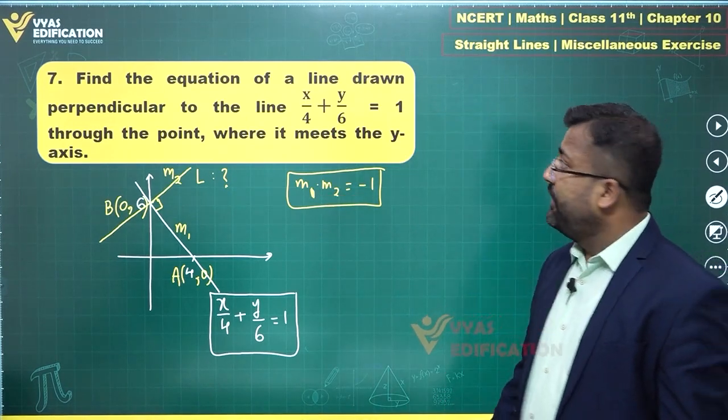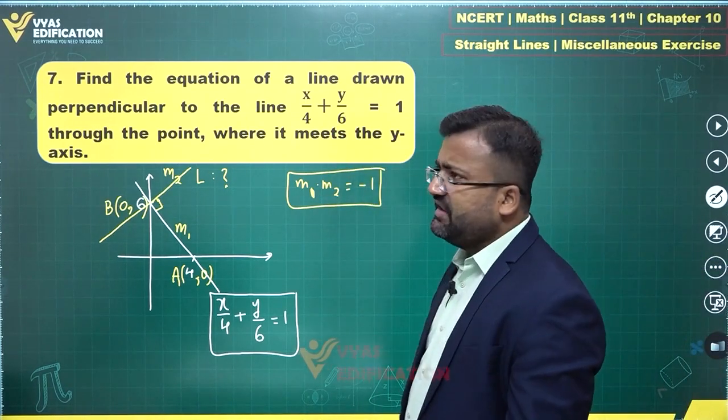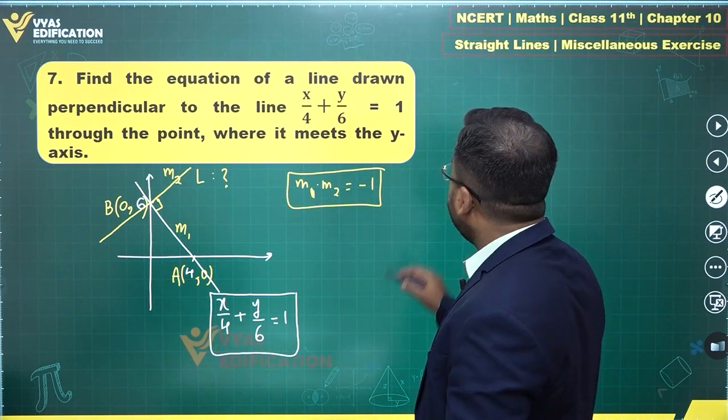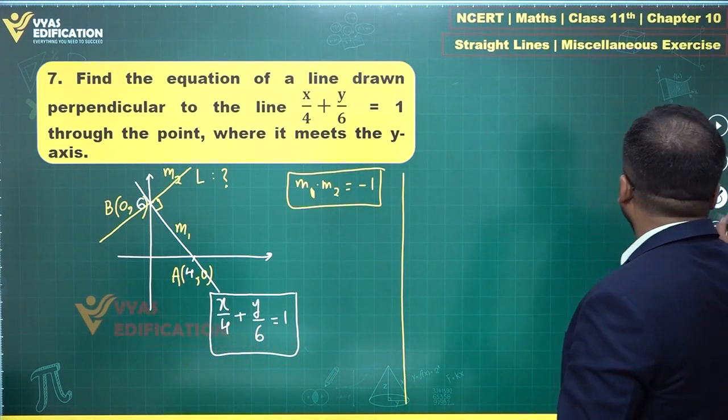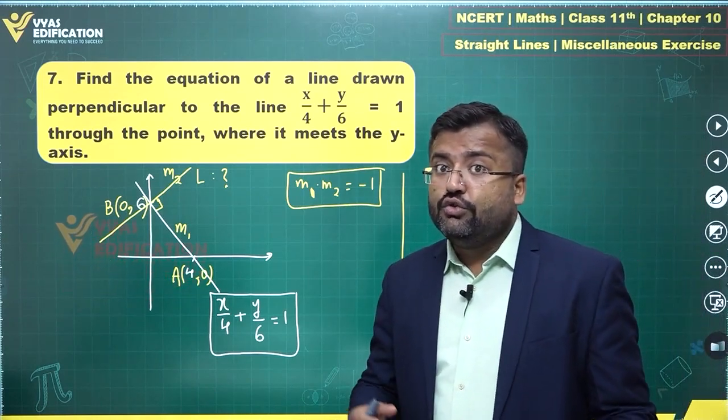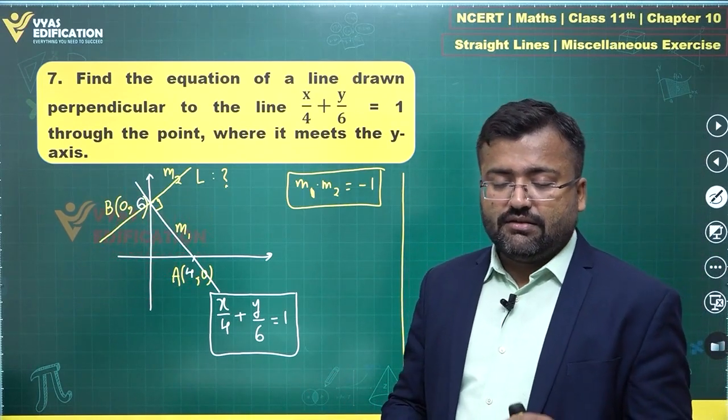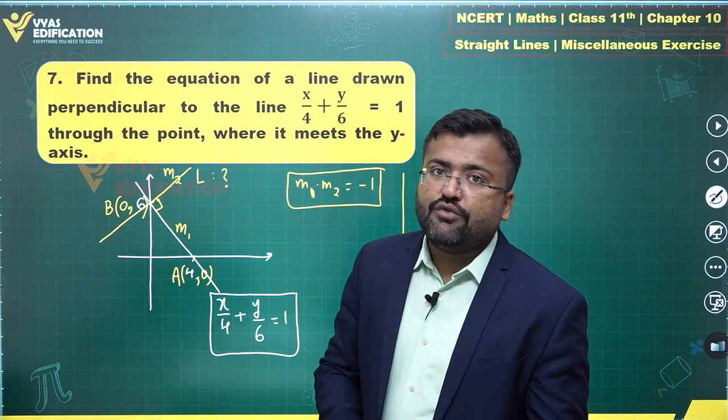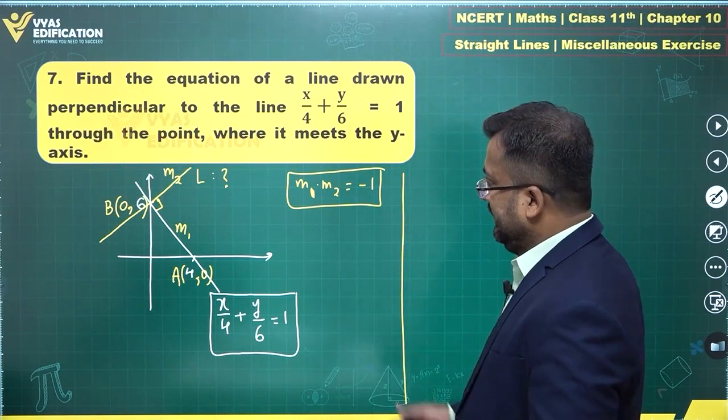Let's take a look at the value of m1 from this equation of line. For finding m1, let's write the line in point-slope form. Although you can use another idea—minus coefficient of x upon coefficient of y—let's use the general approach.